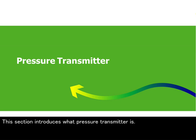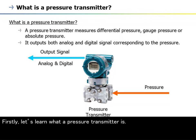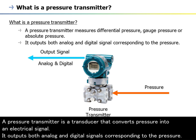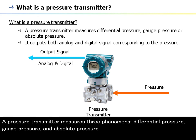This section introduces what a pressure transmitter is. A pressure transmitter is a transducer that converts pressure into an electrical signal. It outputs both analog and digital signals corresponding to the pressure. A pressure transmitter measures three phenomena: differential pressure, gauge pressure, and absolute pressure.